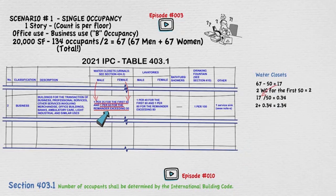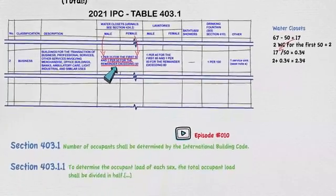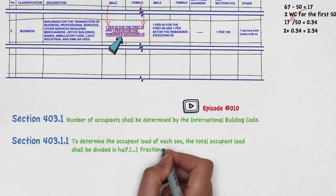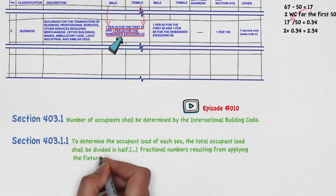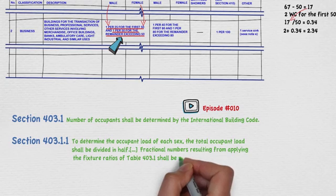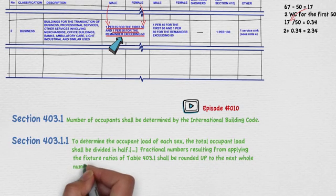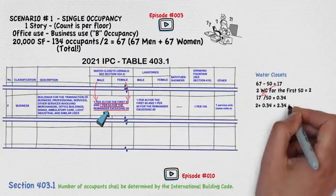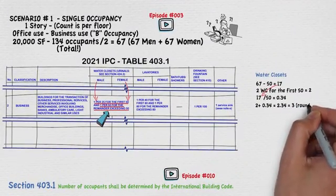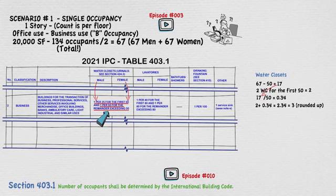Obviously we cannot have 0.34 water closets. Section 403.1.1 states that fractional numbers resulting from applying the fixture ratios of table 403.1 shall be rounded up to the next whole number. With this stated, our 2.34 gets rounded up to 3. So now we know that male and female restrooms each require 3 water closets.